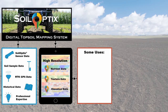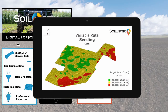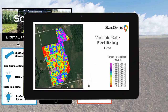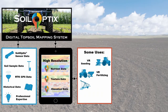High-resolution soil data such as soil optics gives opportunities to create variable rate applications for operations such as seeding for corn or soybeans, and variable rate fertilizer applications such as lime, potash, or phosphorus.